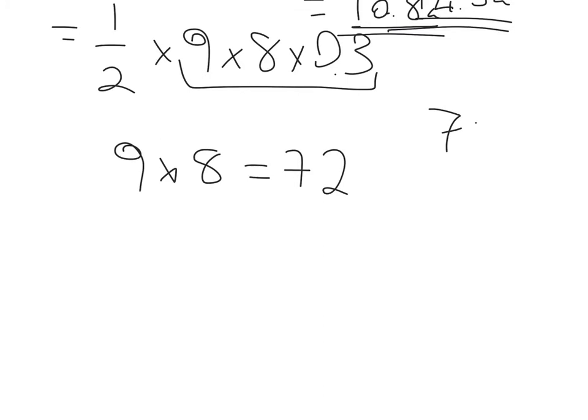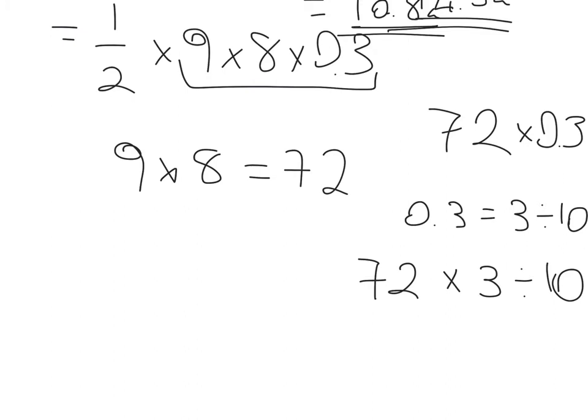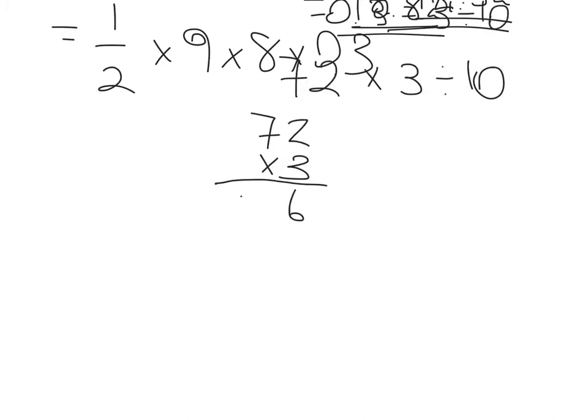So it's then going to be 72 times 0.3. Well, remember that 0.3 is just 3 divided by 10. So I could rewrite 72 times 0.3 as 72 times 3 divided by 10. So 72 times 3 would give me 216.